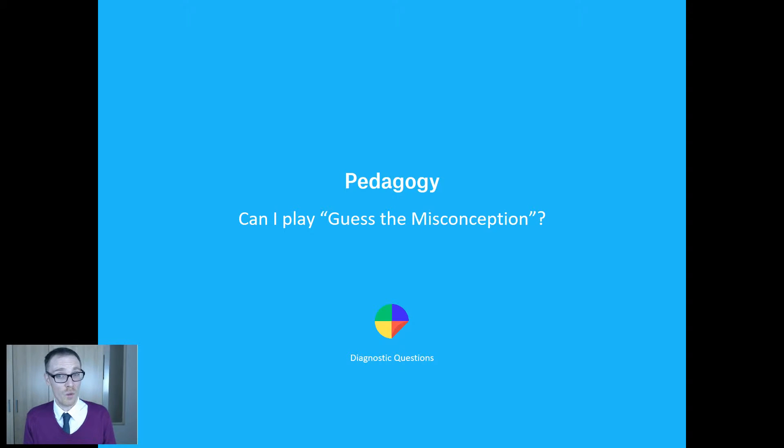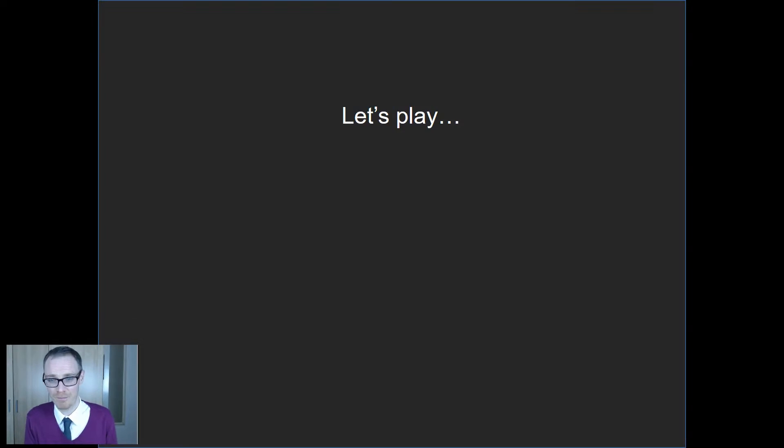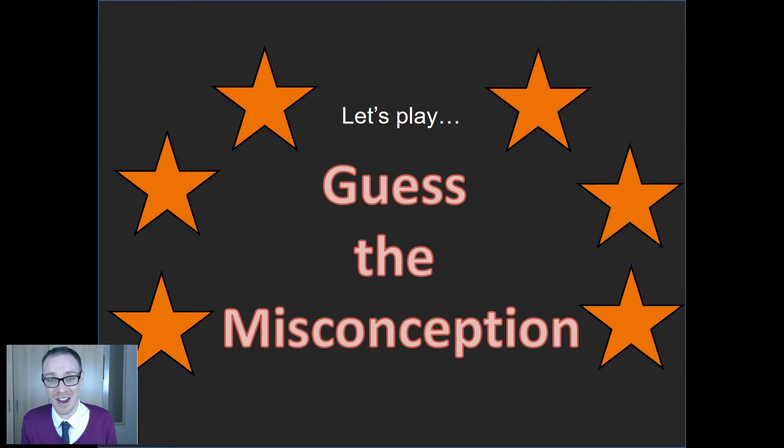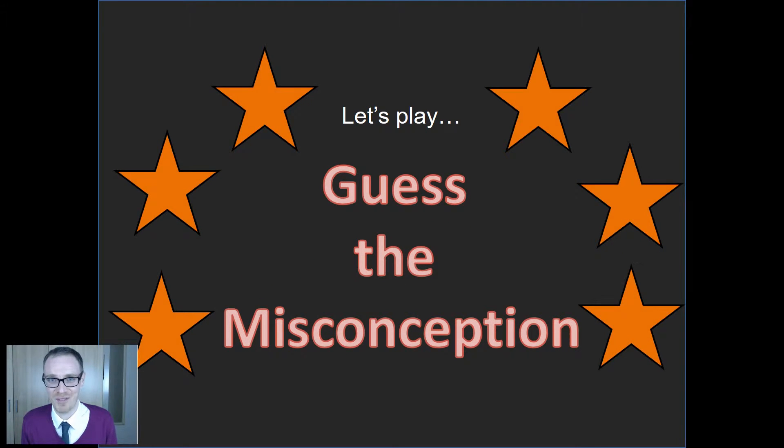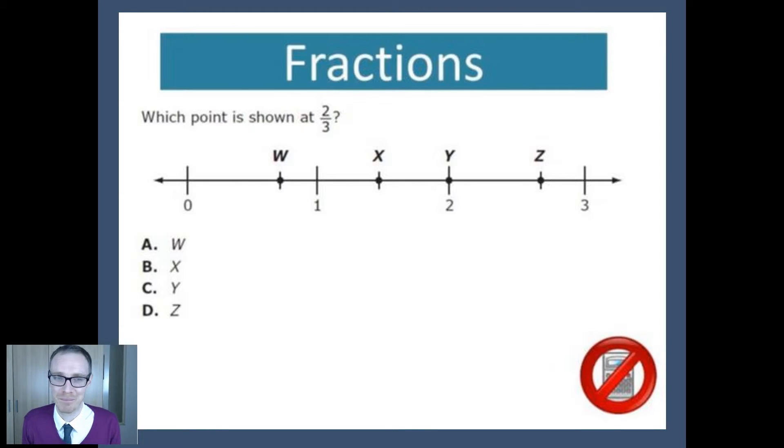Okay, so without further ado, let's play Guess the Misconception. Oh, I've done some top-class animation for you there as well. All right, so here's the first question: which point is shown at two-thirds? W, X, Y, Z? And there's your answer and there's your choices. Now at this stage it's probably a good idea to pause the video and just think to yourself what is the most popular incorrect answer.